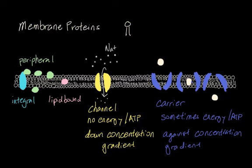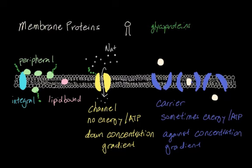Finally, there's a type of protein that can exist on any of the proteins we've drawn. This is what we call a glycoprotein. A glycoprotein has a chain of sugars attached to a protein, and it can be on integral proteins, peripheral proteins, or channel proteins. The prefix 'glyco' means sugar, so it's essentially sugar plus protein. The purpose of glycoproteins is signaling — they allow a cell to recognize another cell.